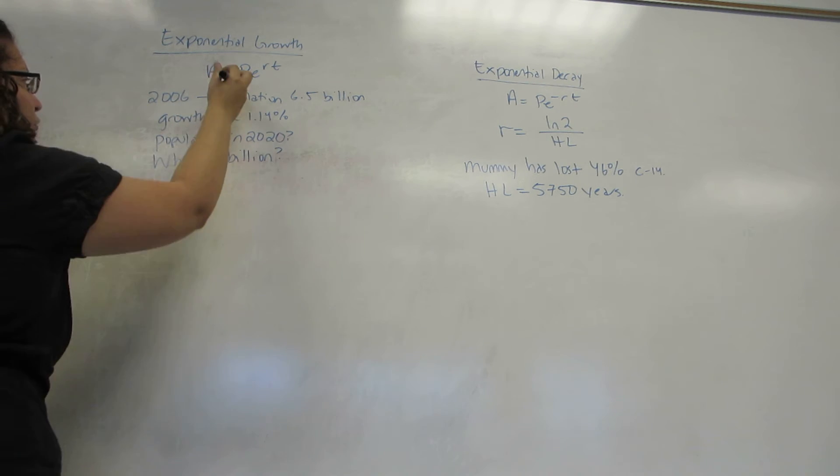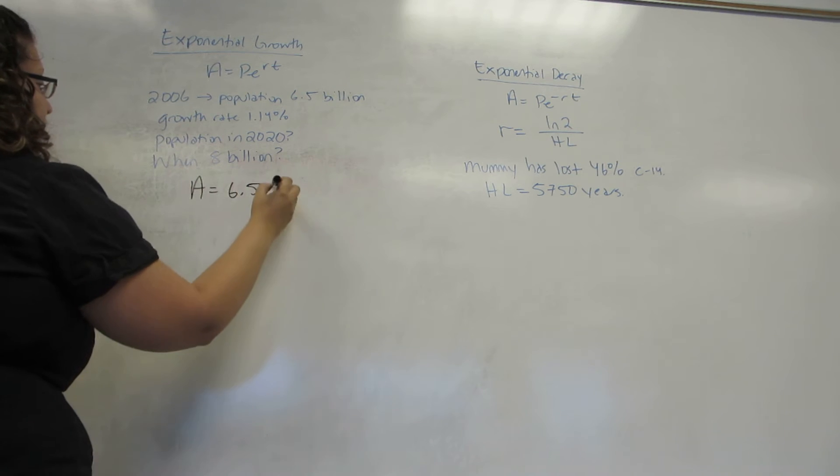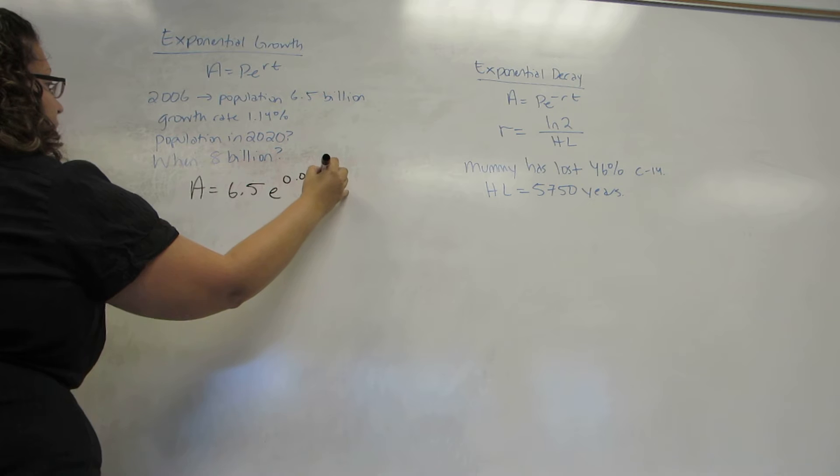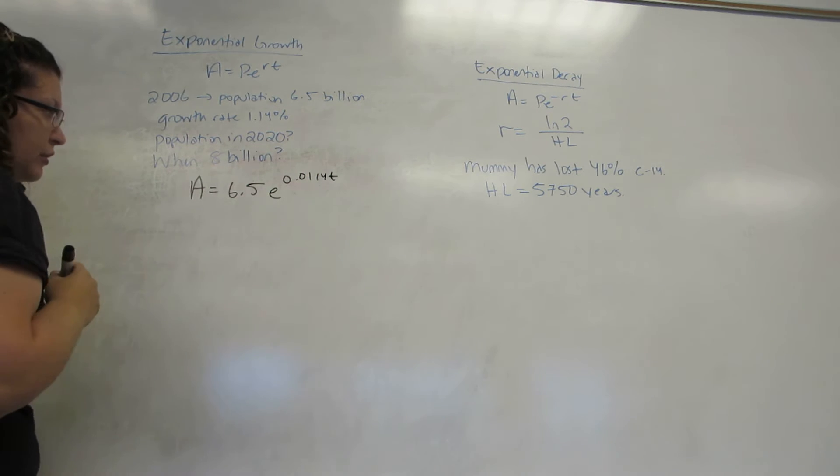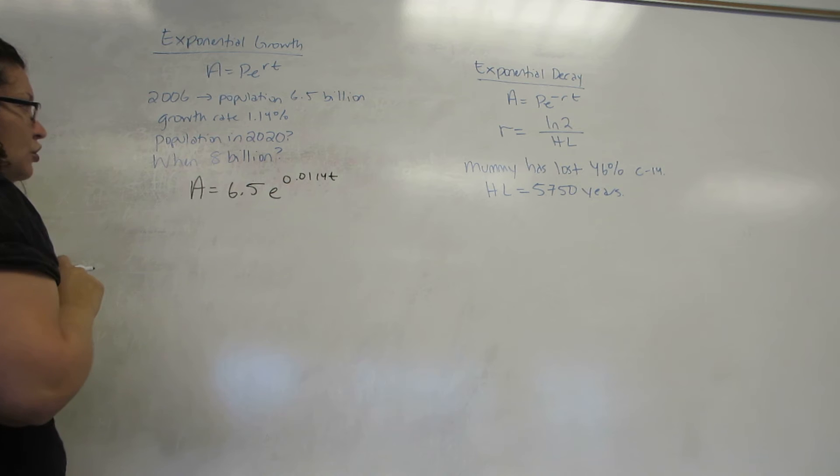So, we plug in what we know. I'm going to do everything in billions so I don't have to write so many zeros. This is our equation. So, for the first one, we want to know what the population will be in 2020.